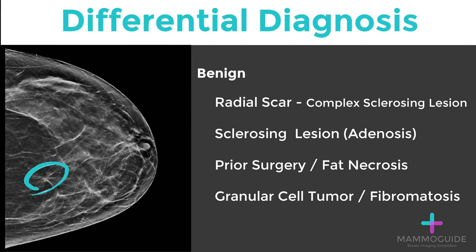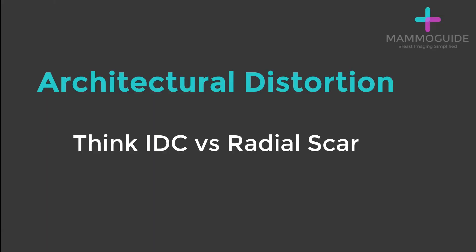A radial scar or complex sclerosing lesion. Other sclerosing lesions, such as sclerosing adenosis or proliferative fibrocystic changes, can occasionally present as distortion. If the patient has a prior surgery or prior procedure and subsequent fat necrosis, this can commonly present as architectural distortion. And less common things like granular cell tumors or fibromatosis.